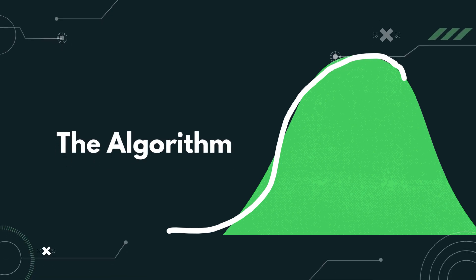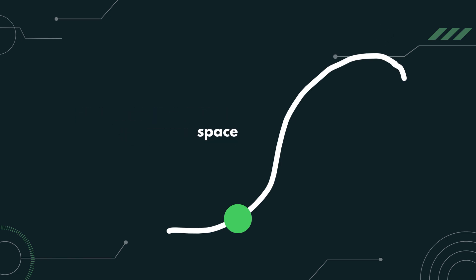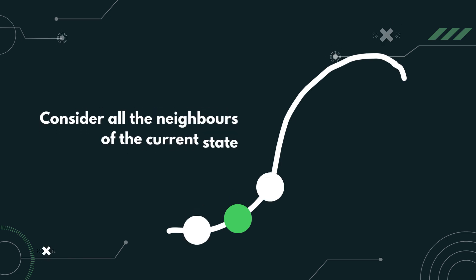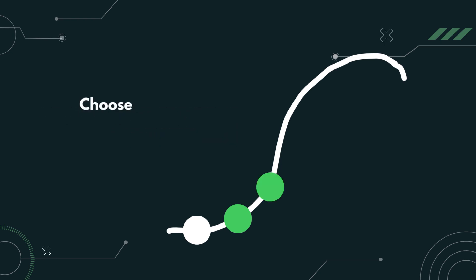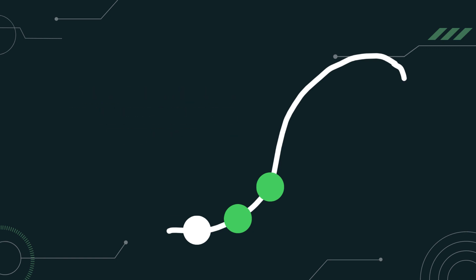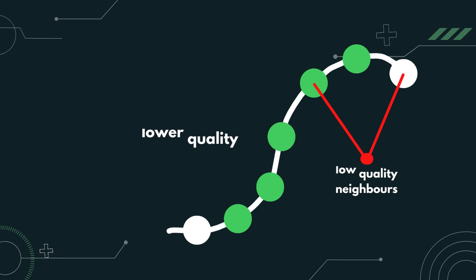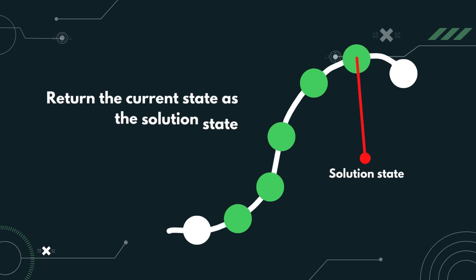Now let's look at how the algorithm works. First, it will pick a random point in the search space. Then, it will consider all the neighbours of the current state. It will choose the neighbour with the best quality and move to that state. This will repeat until eventually all the neighbouring states are of lower quality than the current state. Finally, it will return the current state as a solution state.